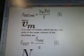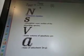Where is in the units of volume, which are also the units of the molar volume of the adsorbent gas. There's lots of equations here, a whole pile of them. Avogadro's number and S adsorption cross-section of the adsorbing species. V molar volume of adsorbent gas is A, and A is mass of adsorbent in grams.